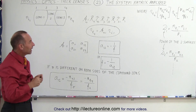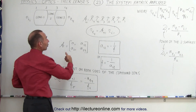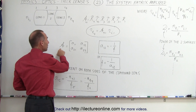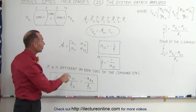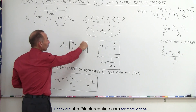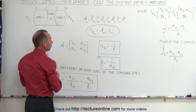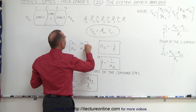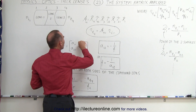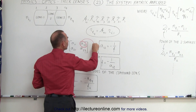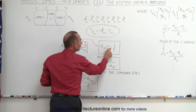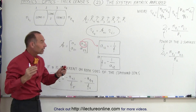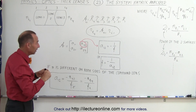If you imagine that each of these matrices are 2x2 matrices, the system matrix is also a 2x2 matrix. Here are the elements of the 2x2 matrix. It turns out that the element A12 has a special meaning: it is equal to the negative of the inverse of the effective focal length of the compound lens system.